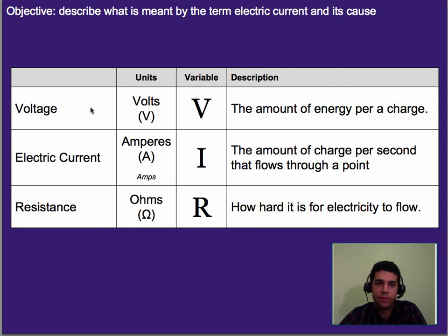Now, we've talked a little bit about this idea of voltage. Voltage is the amount of energy per charge. So basically, think of it as, as charge moves through a circuit, how much energy does each charge have?